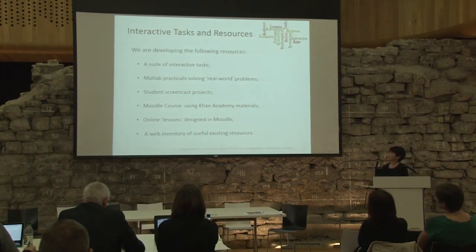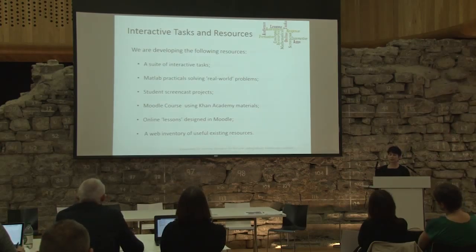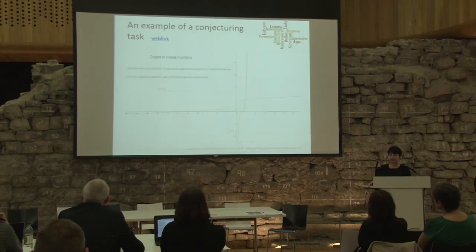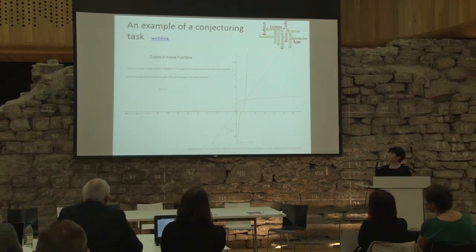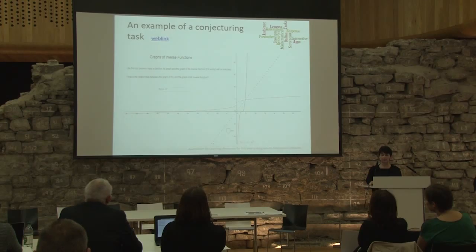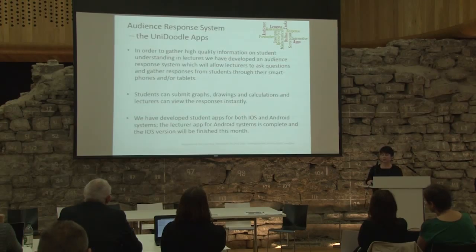These are some of the interactive tasks and resources we've been working on — we showed some of these at last summer's meeting. We wanted to focus today on the audience response system, since we didn't have any of that last summer. As a quick example of a conjecturing task for first-year students: instead of telling students that the graph of an inverse function is found by reflecting in the line y = x, you let them figure that out for themselves by inputting different functions, observing the graphs, and finding the connection.